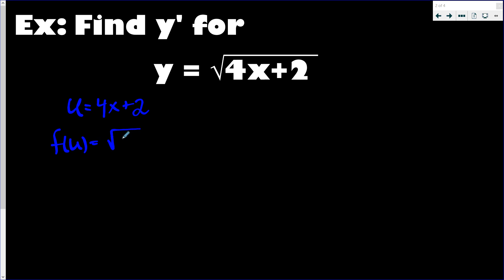Basically, that turns my f(u) into the square root of u. I've taken the 4x plus 2 and replaced it with u. For the chain rule, I need the derivative of both of these — I need my u prime and my f prime of u — because the chain rule is just f prime of u times u prime.